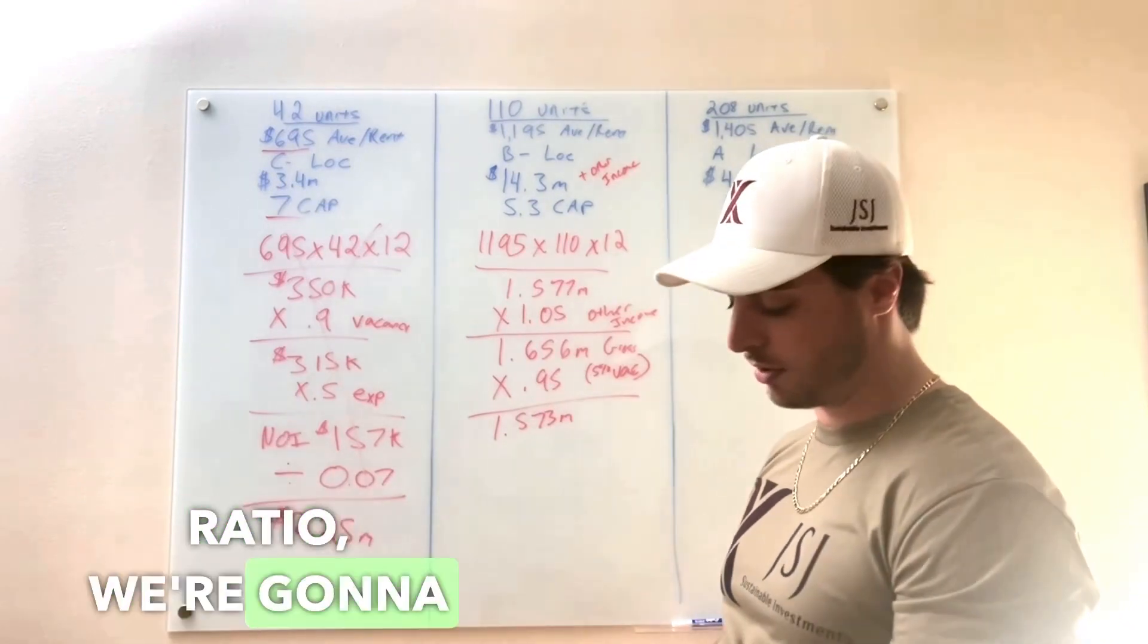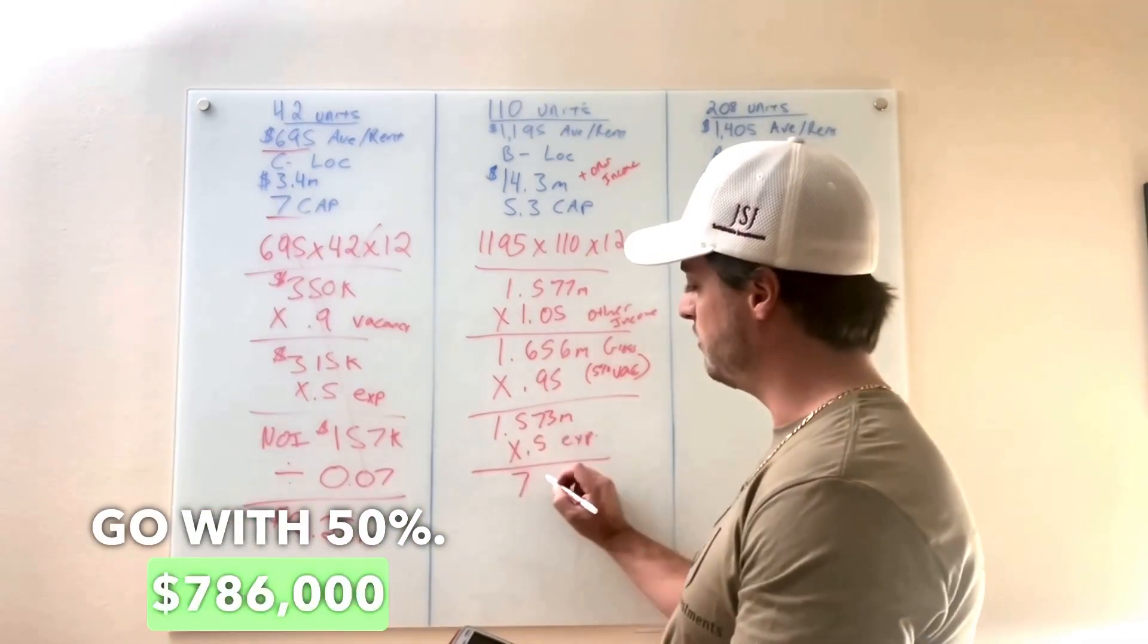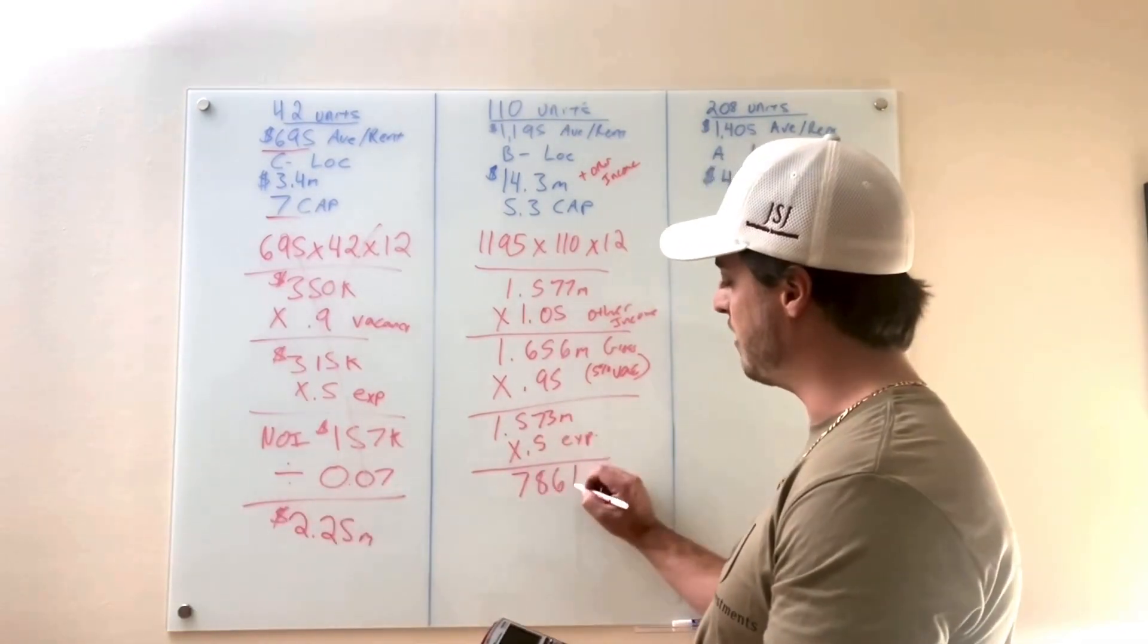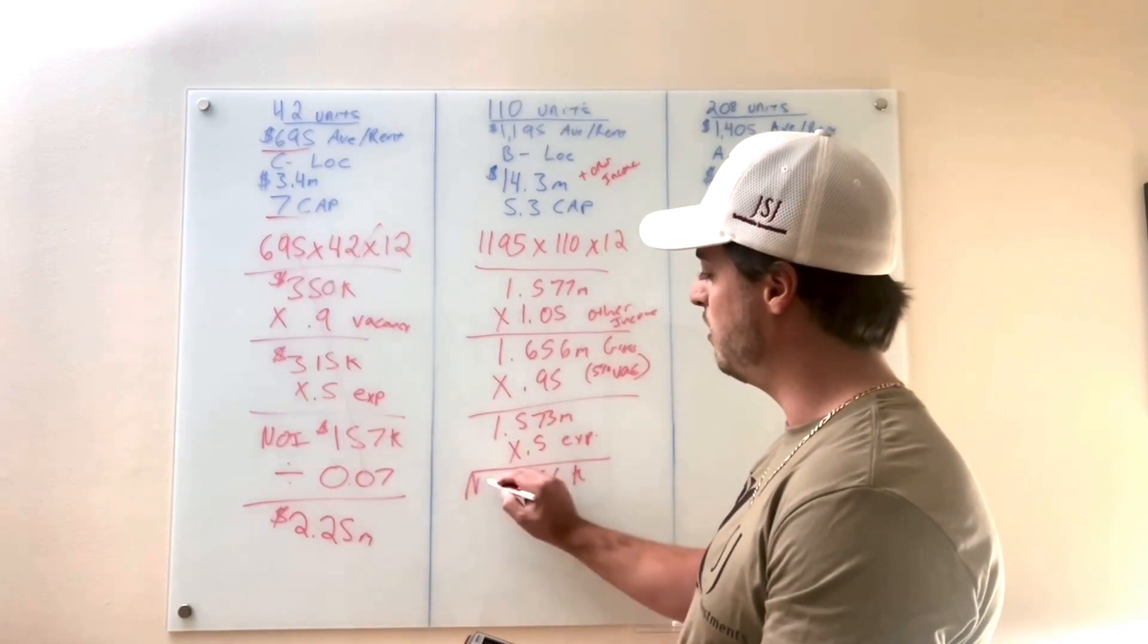And same expense ratio, we're going to go with 50%. $786,000 of NOI.